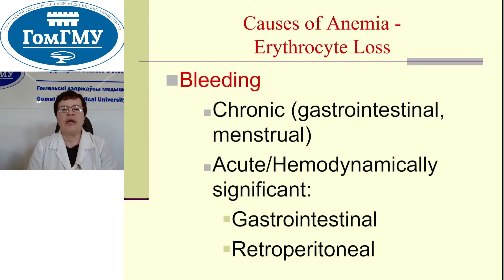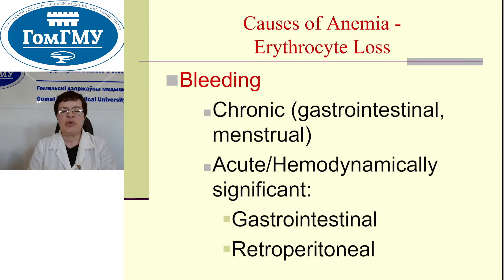Causes of anemia. Erythrocyte loss — bleeding. Chronic bleeding, for example gastrointestinal or menstrual bleeding, and acute hemodynamically significant gastrointestinal and retroperitoneal bleedings.